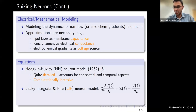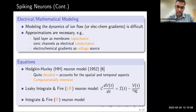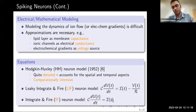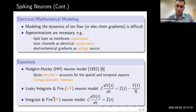A more commonly used model in spiking neural networks is the Leaky Integrate-and-Fire (LIF) neuron model. Its equation has C as membrane capacitance, V as membrane voltage, I as input current, and 1/R as conductance. The simpler Integrate-and-Fire (IF) model is similar, but lacks the leakage term — meaning voltage does not decay over time in IF, whereas in LIF it does. Both LIF and IF are called point neuron models.